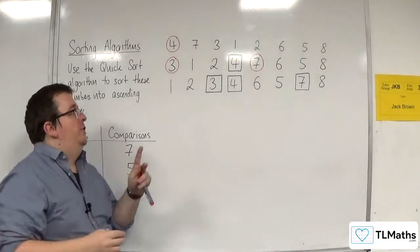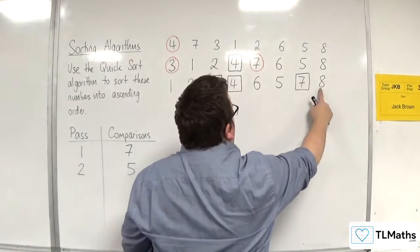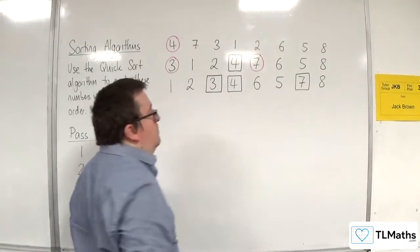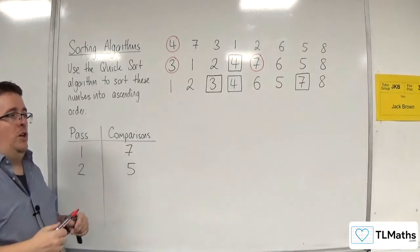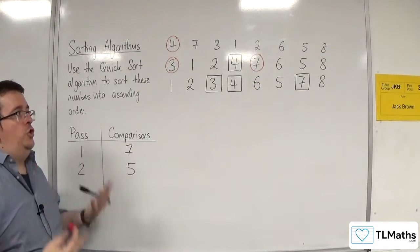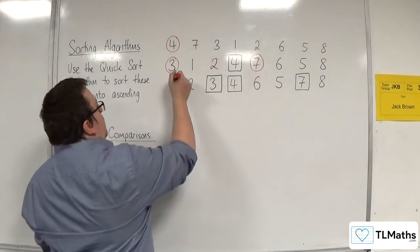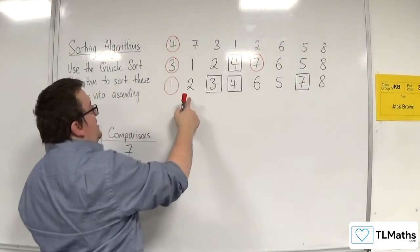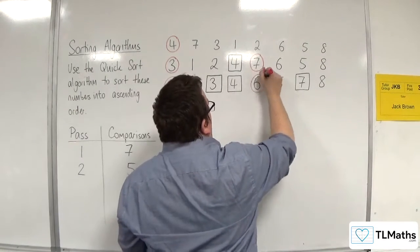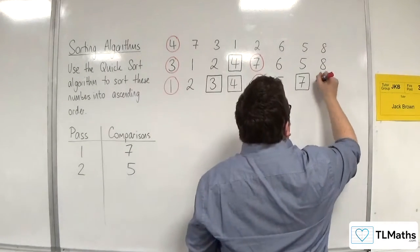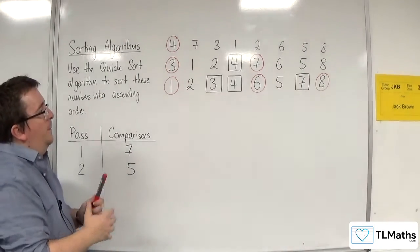So we now have three sublists. We've got this one, this one, and this one. This one only has one number in it. That's fine. But eventually, all numbers should be boxed. That is the target. So one is the first number in that sublist, so that gets picked as the pivot. Then six gets picked as the pivot, and eight gets picked as the pivot for that sublist.